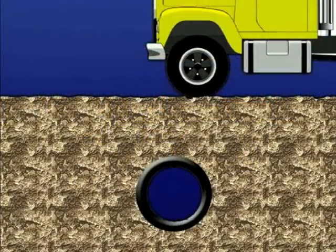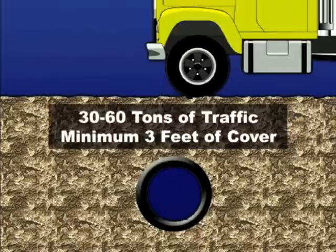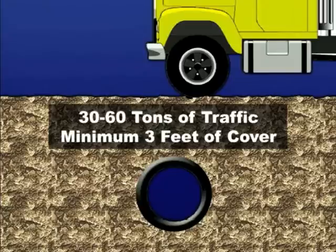For areas receiving heavy construction traffic between 30 and 60 tons, a minimum 3 feet of cover is required. Heavier equipment will require additional cover. If sufficient cover is not provided, mound and compact material over the pipe to provide the minimum cover needed during construction.